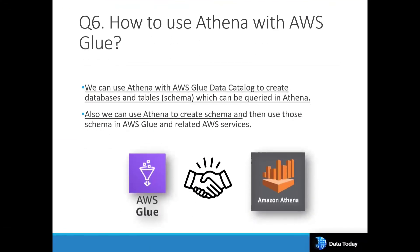How do we use Athena with AWS Glue? This is a very important interview question about compatibility. We can use Athena with the AWS Glue Data Catalog to create databases and table schemas, which can then be queried in Athena using standard SQL. You can also use Athena to create schemas and then use those schemas in AWS Glue and related AWS services. AWS Glue provides out-of-the-box support for Athena in this way.